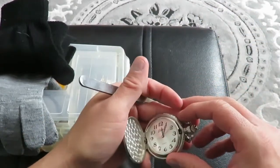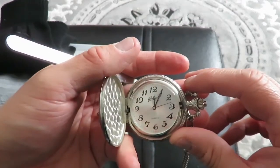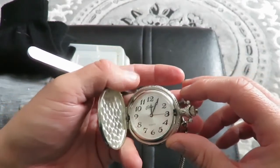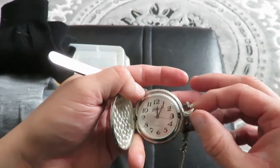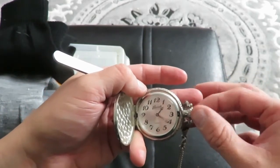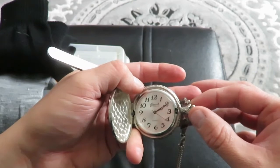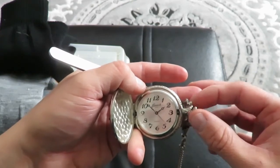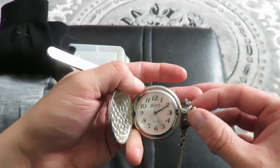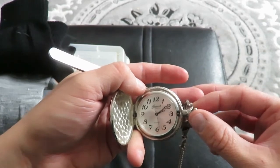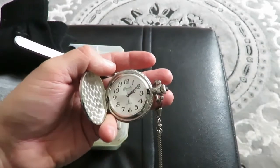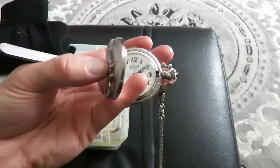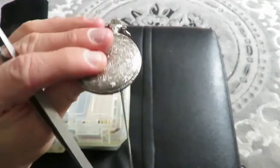You just pop your backing back on, give it a good tight squeeze. There you go, of course as you can see it's now working. You're going to set your time to it. There you go, that is how you change battery on that pocket watch.